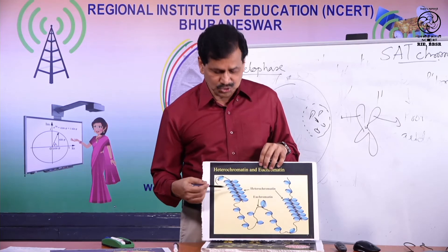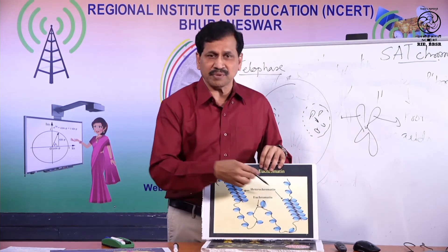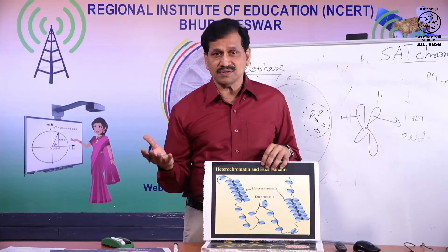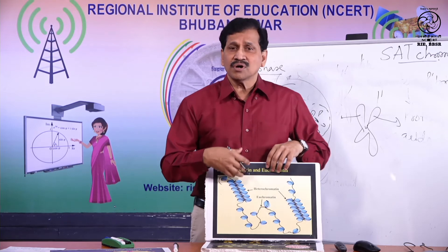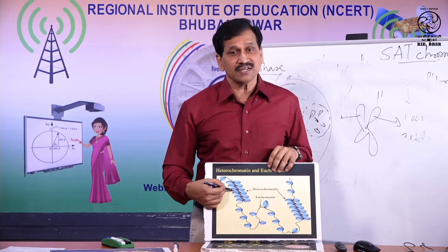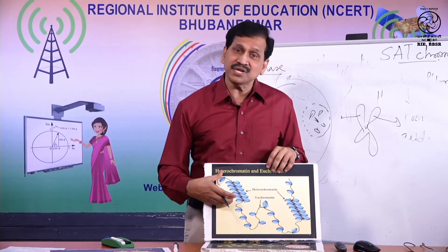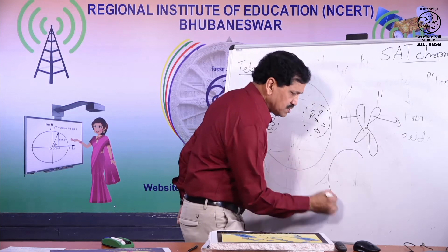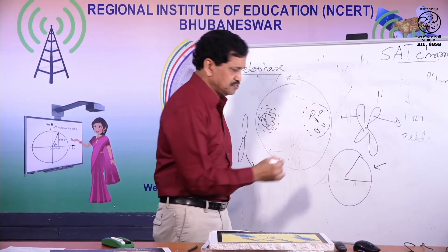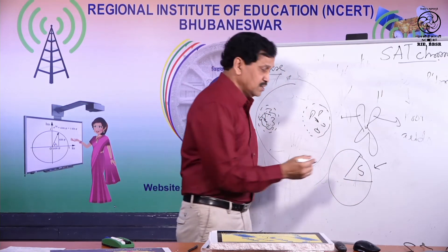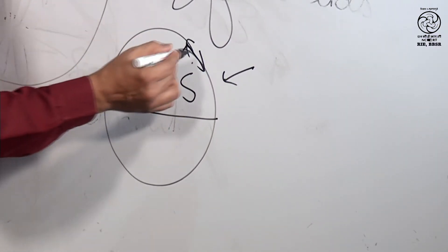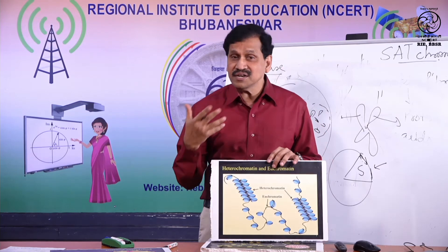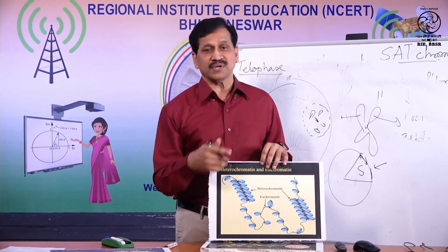During interphase, DNA undergoes replication. For replication to occur, the chromatin must totally uncoil. If it is tightly coiled, DNA replication will not take place. Euchromatin undergoes replication in the early S-phase stage, while heterochromatin undergoes replication in the late S-phase stage. Therefore, euchromatin is early-replicating chromatin, and heterochromatin is late-replicating chromatin.